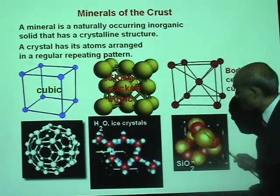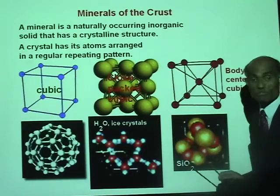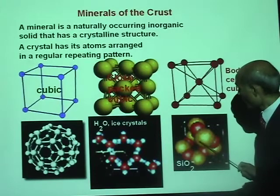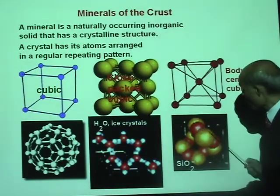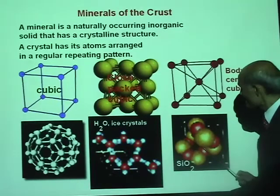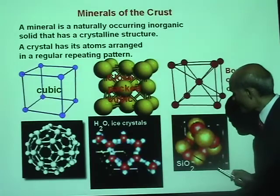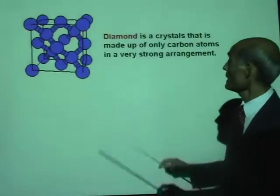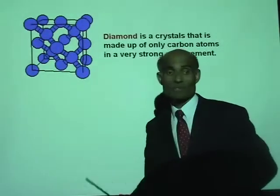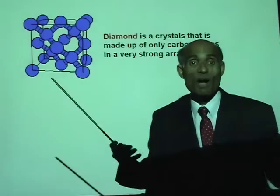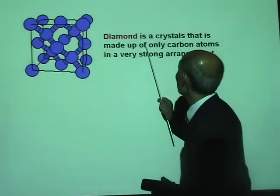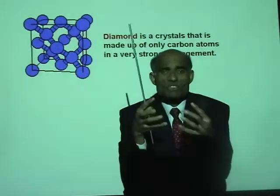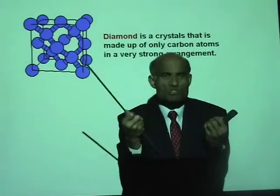This is a basic crystal which most of the rock materials are made of — this is called silicon dioxide. It is made up of one atom of silicon and two atoms of oxygen. The yellow is silicon and the red are oxygen, and you can see that arrangement is repeated in the making of that mineral. Diamond — look at the arrangement of diamond. Diamond is actually made of carbon, a crystal made up of only carbon atoms in a very strong arrangement. It is the arrangement of the atoms that gives the strength of that material.